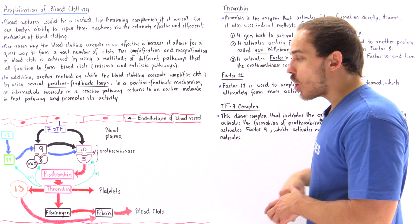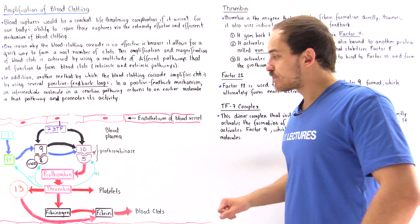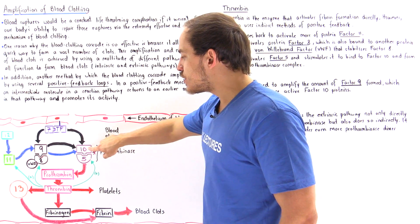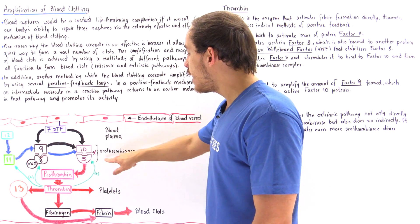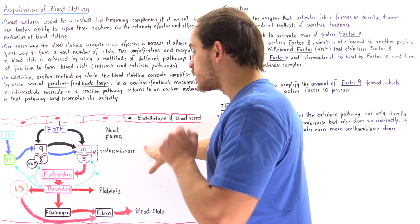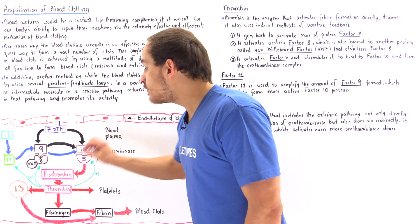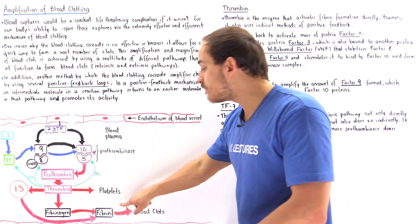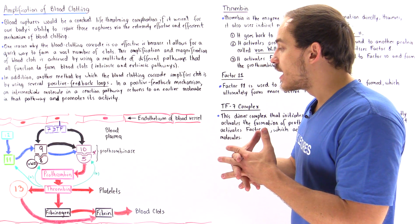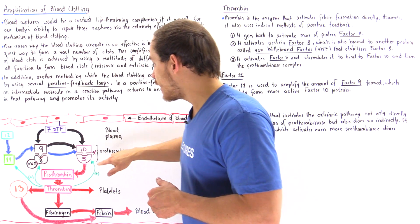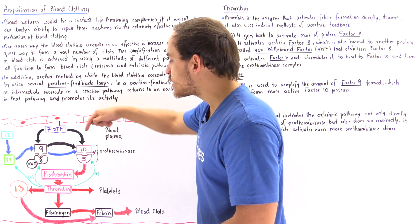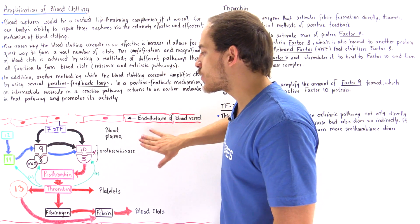The positive feedback loops are shown in green. The entire purpose of the intrinsic and extrinsic pathways is to produce the dimer protein complex we call prothrombinase, because it's prothrombinase that ultimately activates prothrombin into thrombin, and it's thrombin that activates fibrinogen to form fibrin — the protein fiber that aggregates to form blood clots. So both pathways work to form this dimer consisting of the two subunits, factor 10 and factor 5, called prothrombinase.